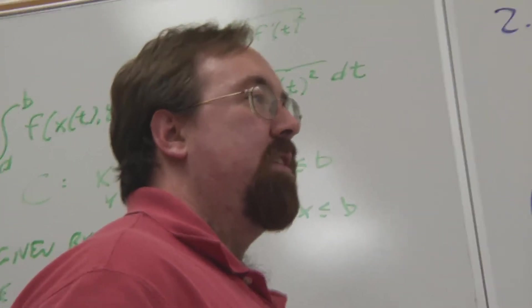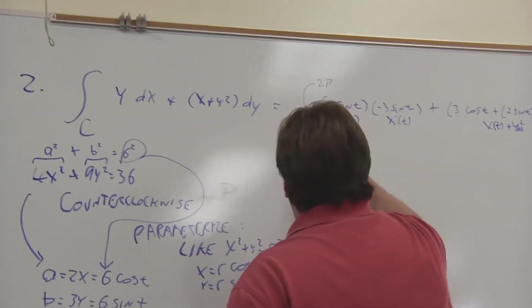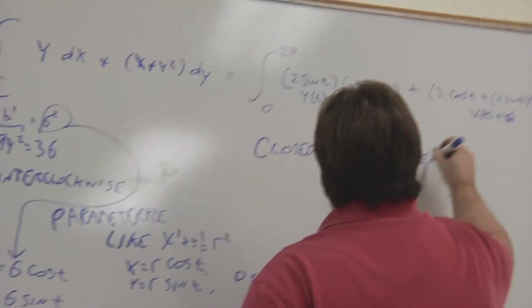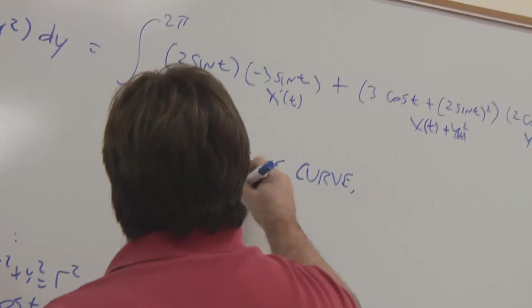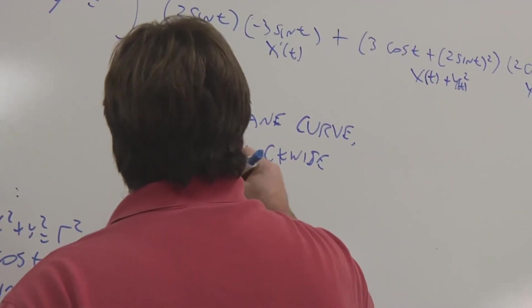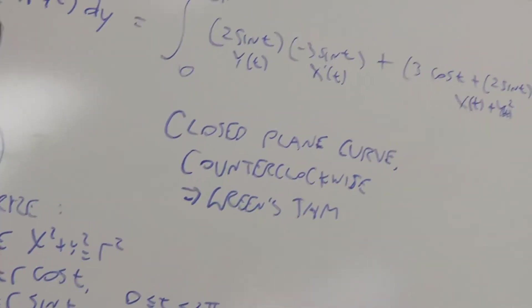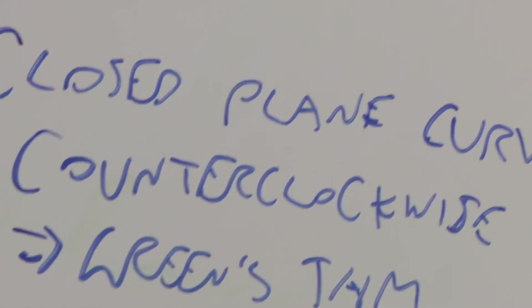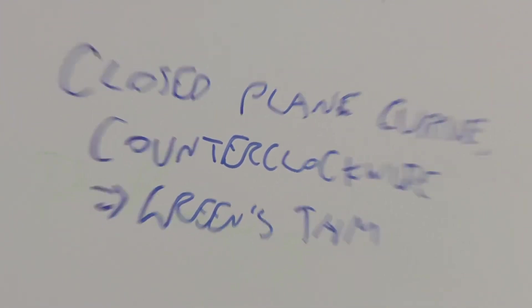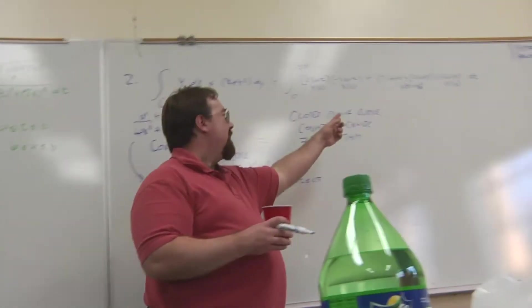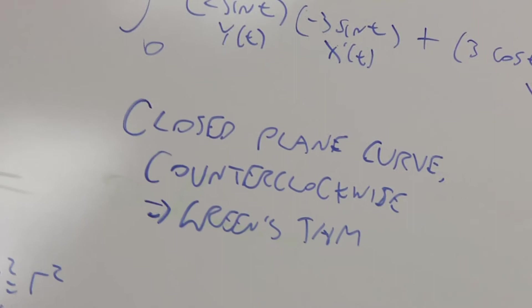So anytime you have a closed curve in the plane, all right, so I'll write that down. If you have a closed curve in the plane that's oriented counterclockwise, like this one is, then it's eligible for Green's theorem. Now, whether Green's theorem will give you a workable integral, that's another matter. You gotta check that out. You might decide this is just as bad or maybe worse, or it could be a whole lot better. So it doesn't hurt to find out. Actually, if it was clockwise, no big deal. You just gotta switch the sign.